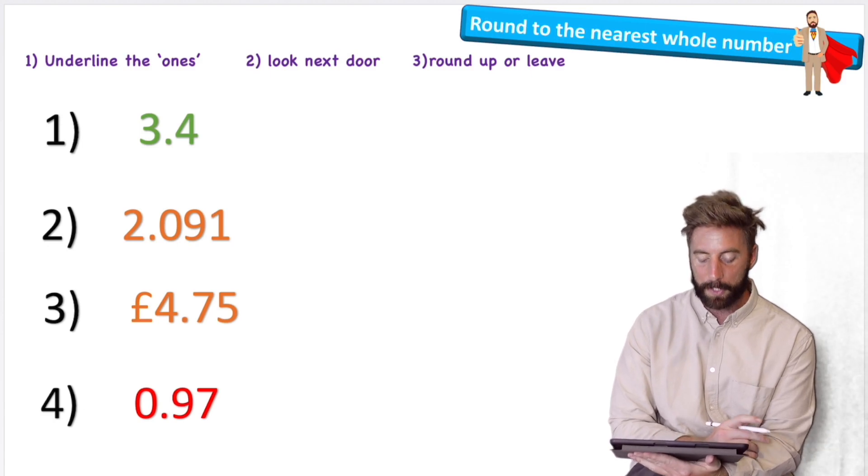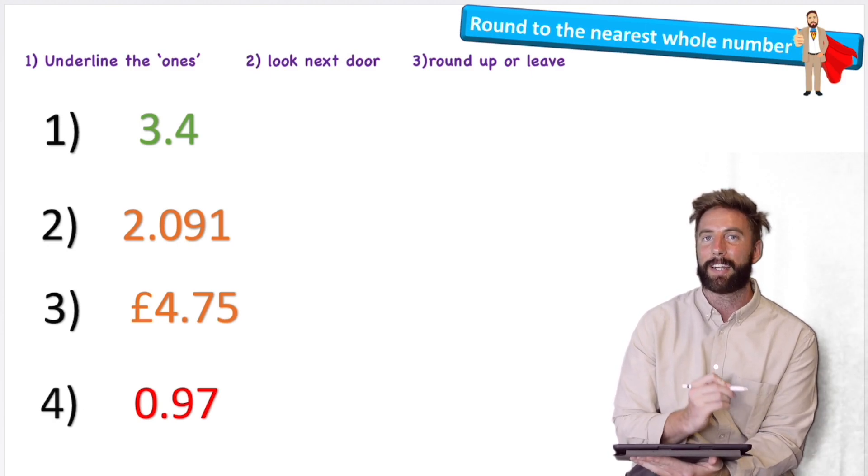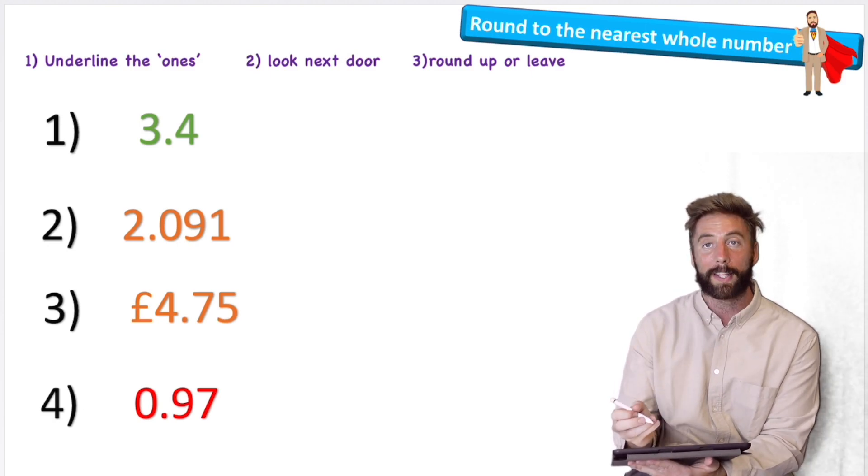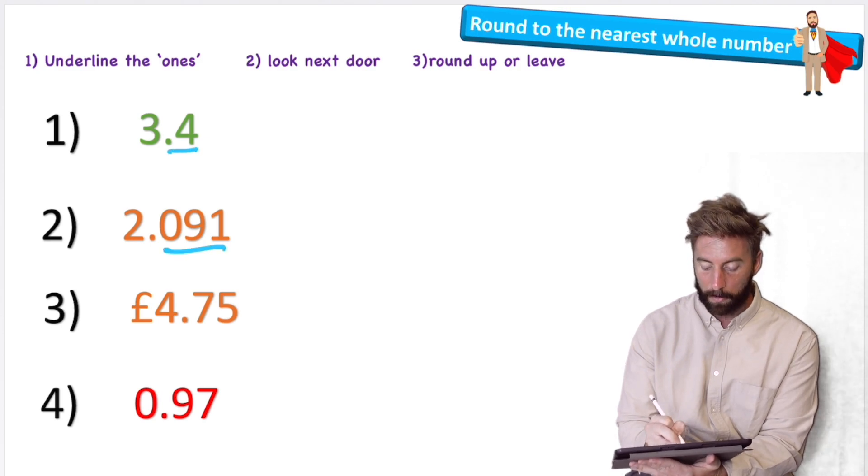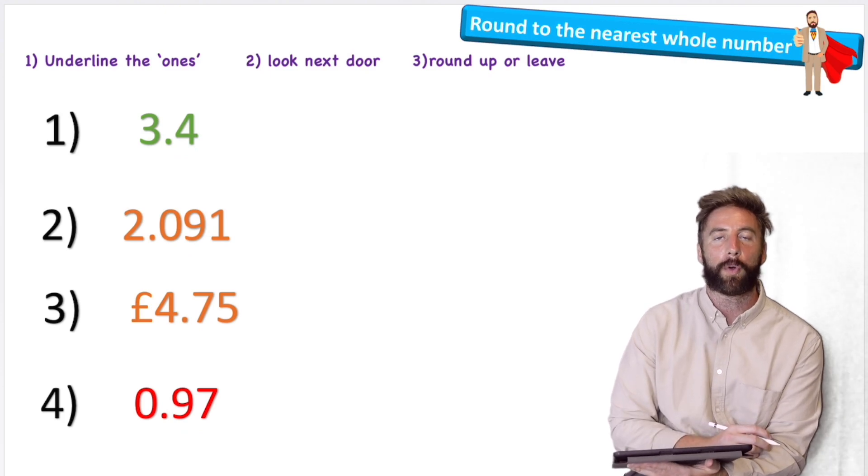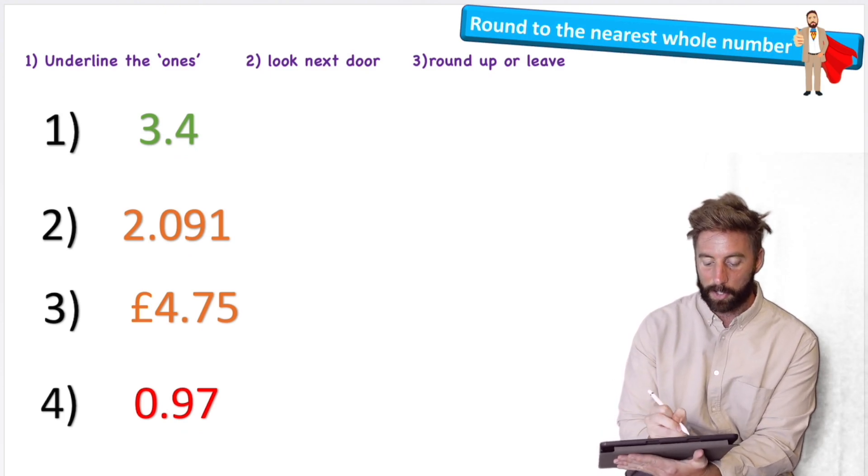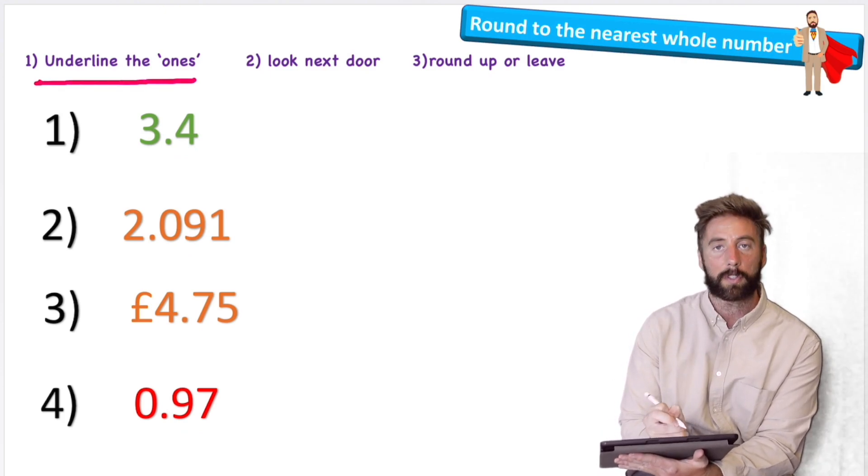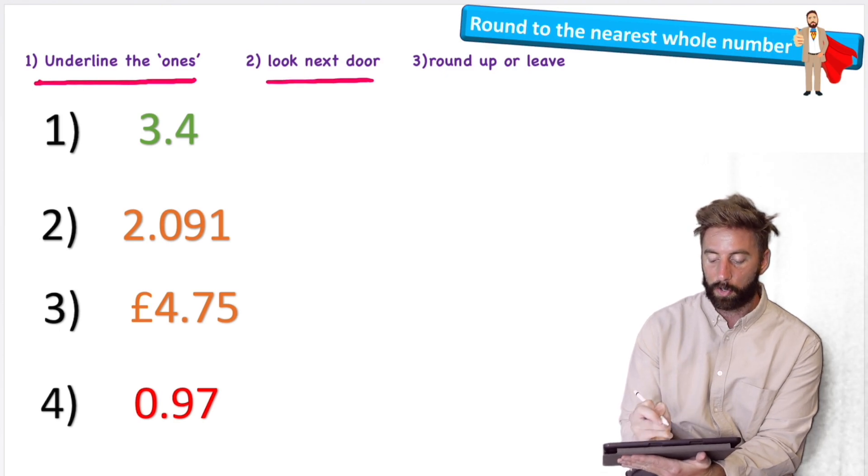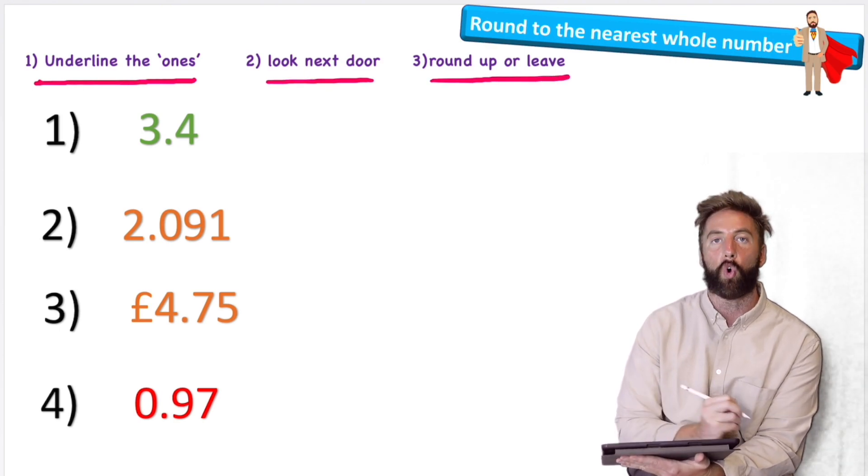We're looking at these four numbers here and we're going to try and round them to the nearest whole number. We can see that all of these numbers have numbers after the decimal point. And we're going to follow a set of steps today. You can see at the top here I have underline the ones. Then we're going to look next door and then we're going to round up or leave.